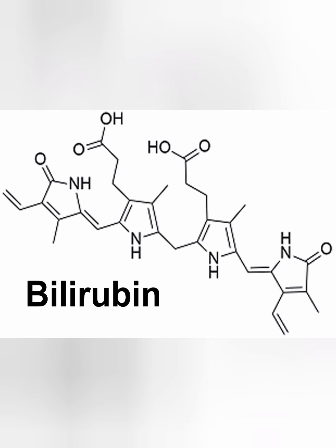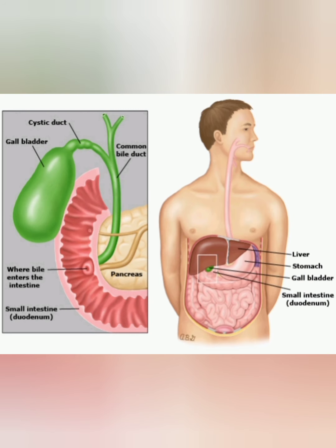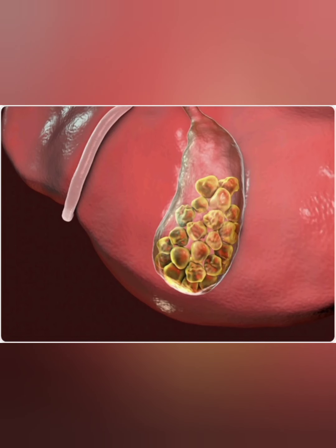2. Bile contains too much bilirubin. Bilirubin is a chemical that is produced when your body breaks down red blood cells. Certain conditions cause your liver to make too much bilirubin, including liver cirrhosis, bile duct infection, and gallstone formation. 3. Gallbladder does not empty. If your gallbladder does not empty completely, bile may become very concentrated, contributing to the formation of gallstones.